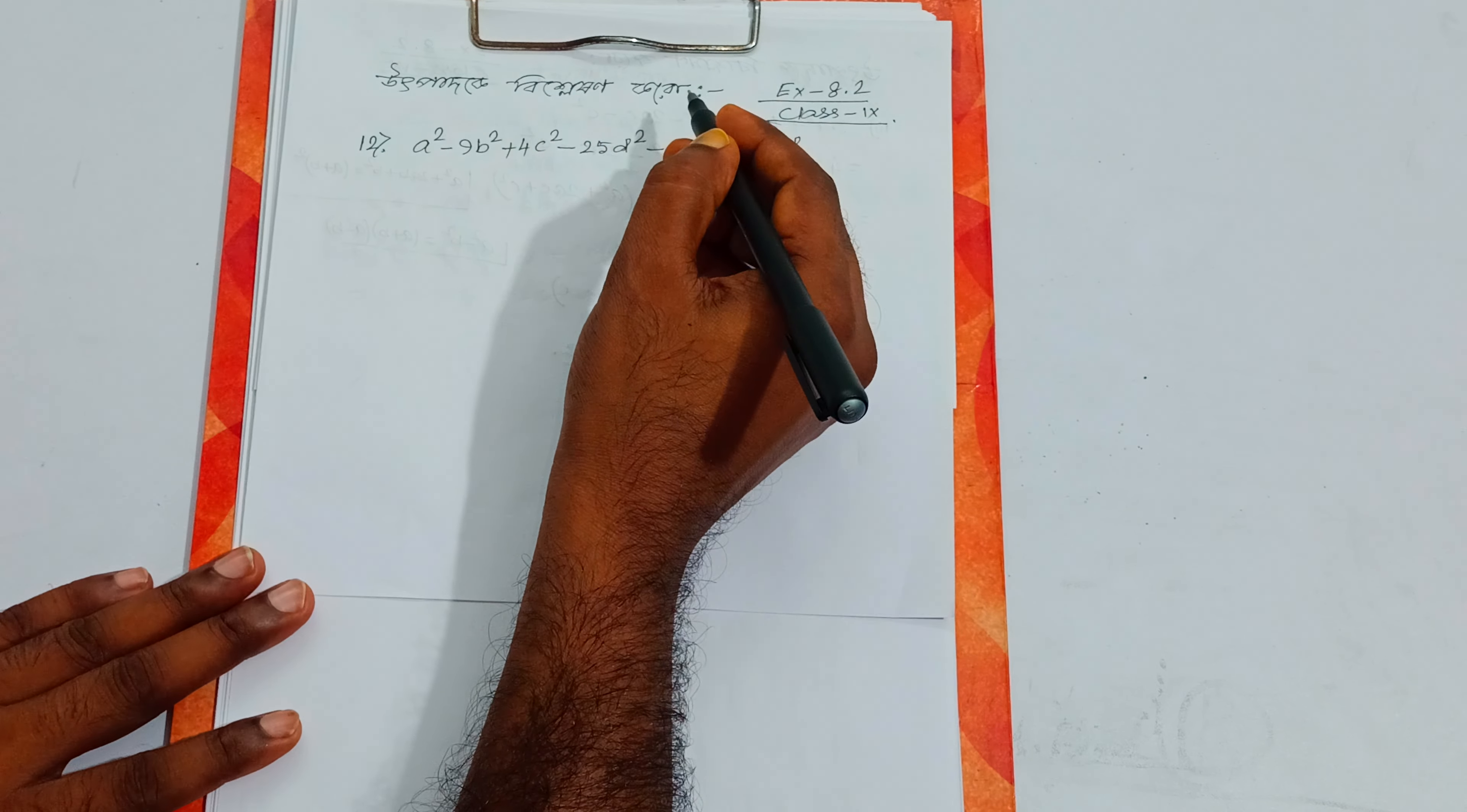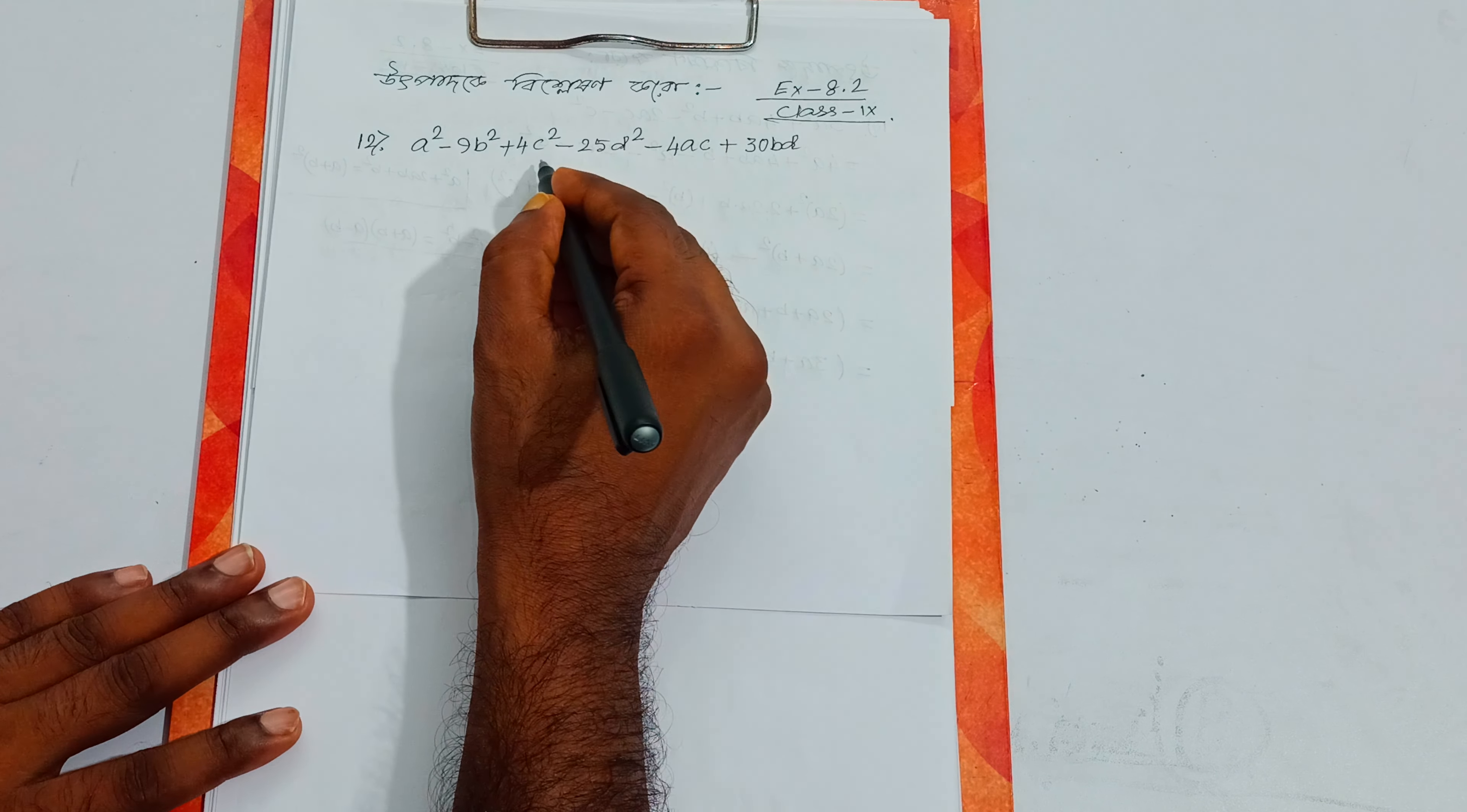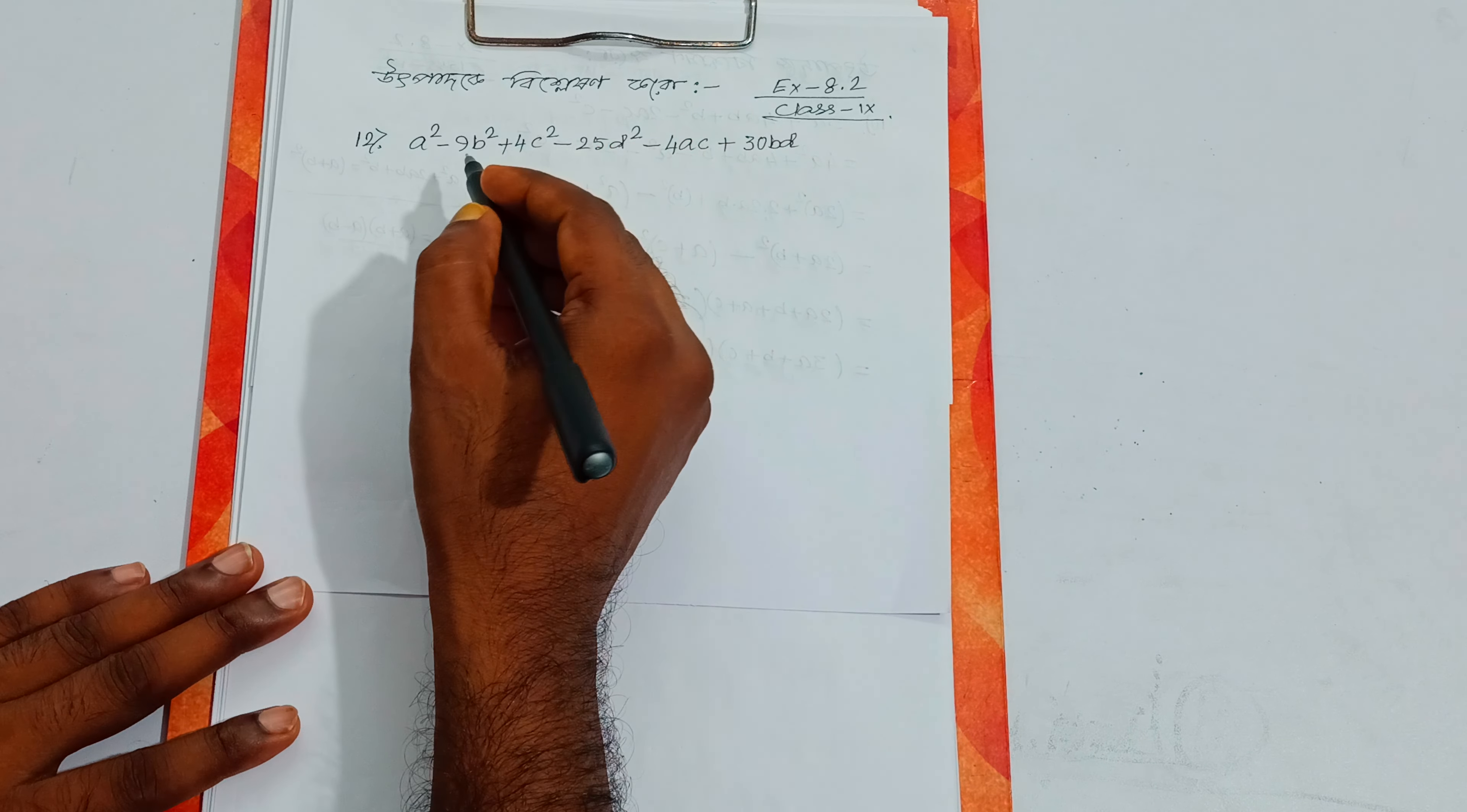Exercise 8.2 Class 9 Question No.12: Factorize the expression a² - 9d² ± 4c² - 25d² - 4ac ± 30bd. Let's work through the factorization of this product.